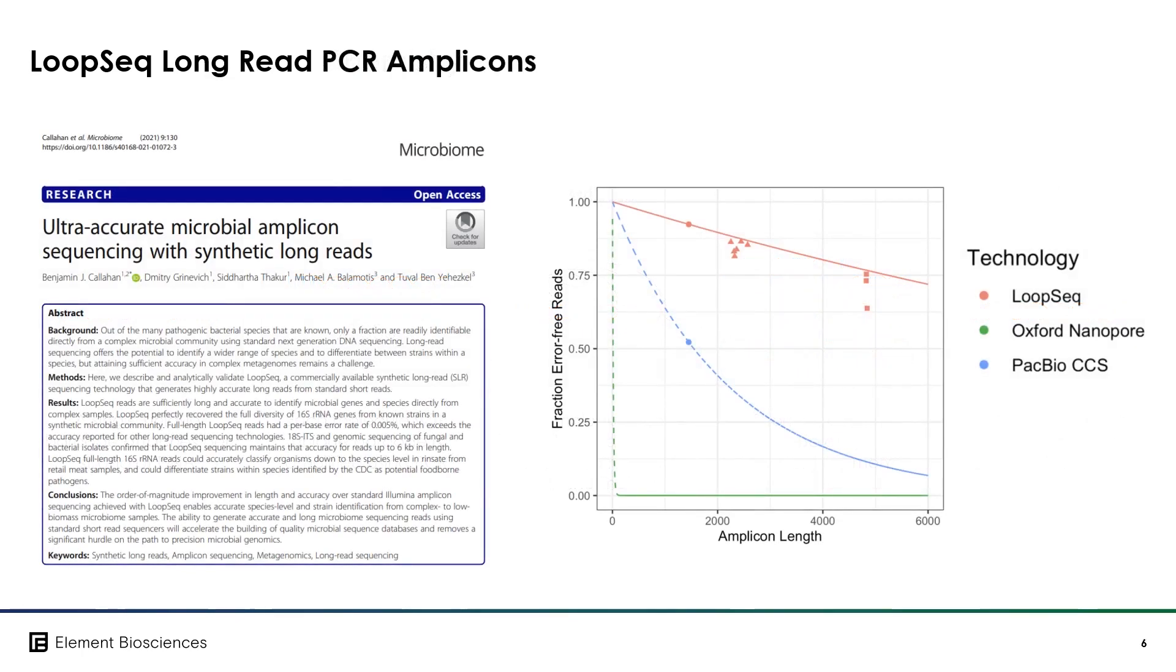In this microbiome example, the customer did a comparison of how LoopSeq synthetic long read technology and Oxford Nanopore and PacBio native long read technologies evaluated 1500, 2500, and 5000 base pair single long reads. The plot on the right shows the fraction of long read molecules that had zero detected errors as a function of the length of the molecule. LoopSeq technology, which is the red line at the top, has the highest fraction of error-free molecules at any particular length.